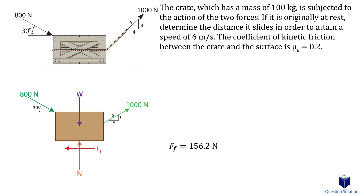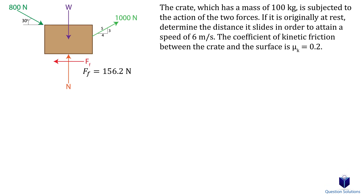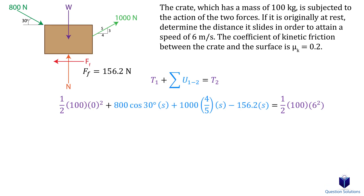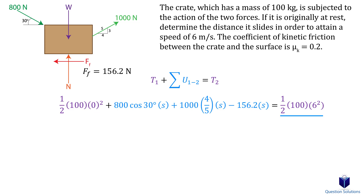Now let's think about work and energy. The box moves in the horizontal axis, so the x components of the applied forces and the frictional force will do work, whereas weight and normal force will not. We write the principle of work and energy equation: half the mass times the initial velocity squared — which is zero since the crate starts from rest — plus the x component forces multiplied by distance, plus the frictional force multiplied by distance, equals half the mass times the final velocity squared, which is 6 meters per second. We can now solve for s.